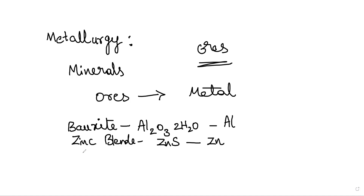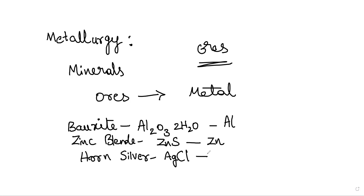I will explain some more important examples. We have a table, table number 1. Next is Horn silver. Its formula is AgCl. Here we have a little metal — Ag, which is silver.